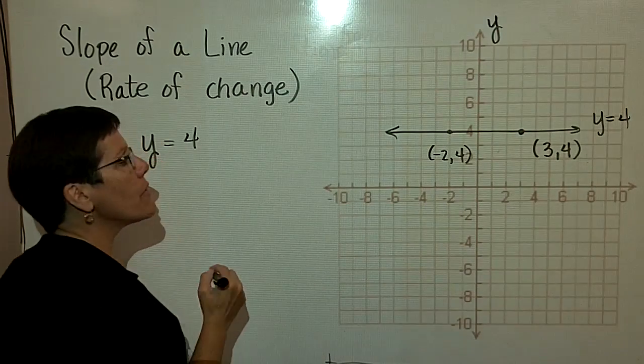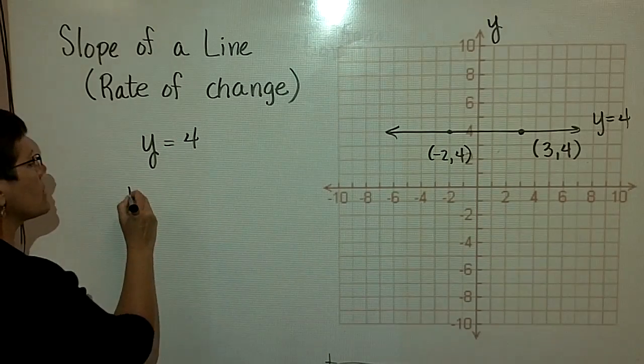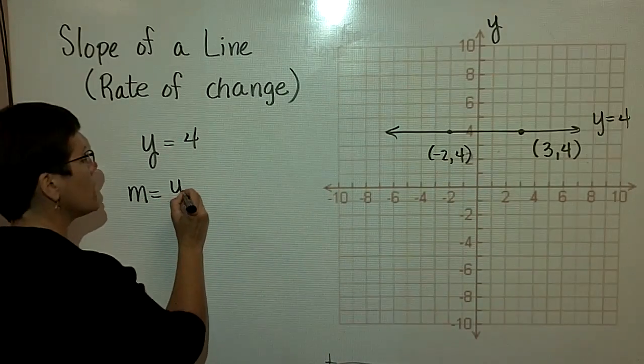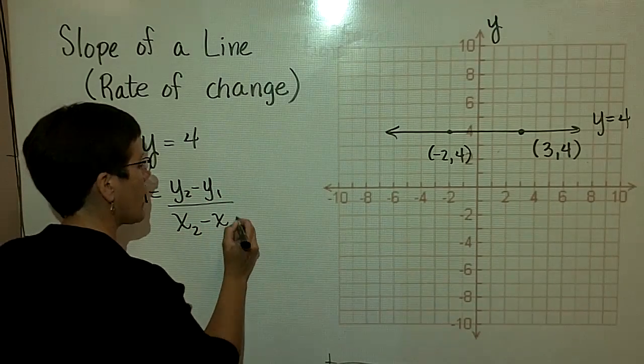If I wanted to find the slope of that line, I just chose to put two ordered pairs down. Remember, slope is defined as y₂ minus y₁ divided by x₂ minus x₁.